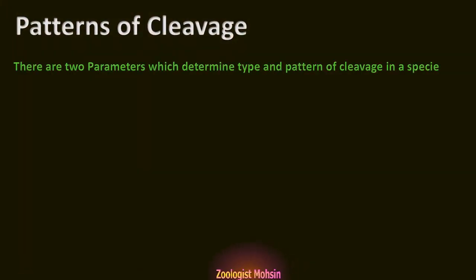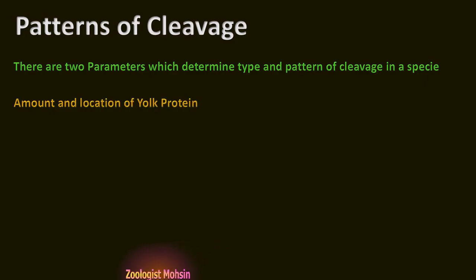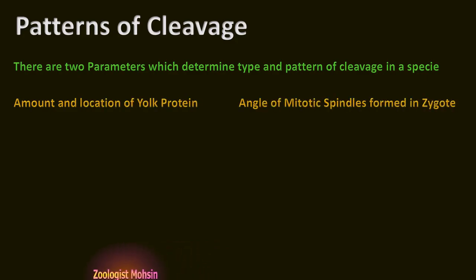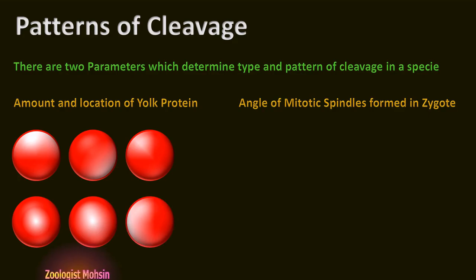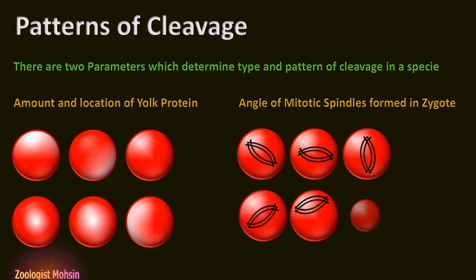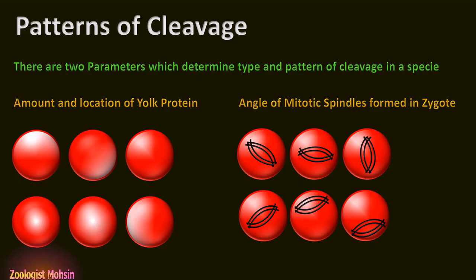There are two parameters which determine the type and pattern of cleavage in a species: the amount and location of yolk protein, and the angle of mitotic spindles formed in the zygote. One principle is common in all cleavages: yolk inhibits or resists cleavage. Where the first spindle fibers are oriented also decides the axis for the first cleavage. Different cells have different orientations of first spindle fibers which align chromosomes.